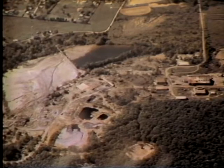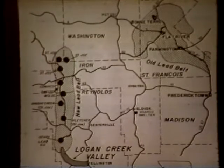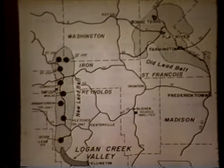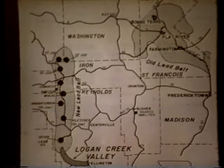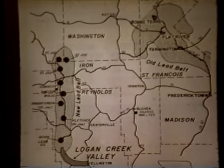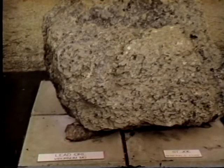I'd like to turn next to the new lead belt, or viburnum trend as it's known. This mine district was discovered in 1955 and the first exploratory mines were opened up in the 1960s. Since then, more than nine mines have been opened. The next slide shows a map of the relationship of the new lead belt to the old lead belt — the new lead belt is on the west side of the St. Francis Mountains.